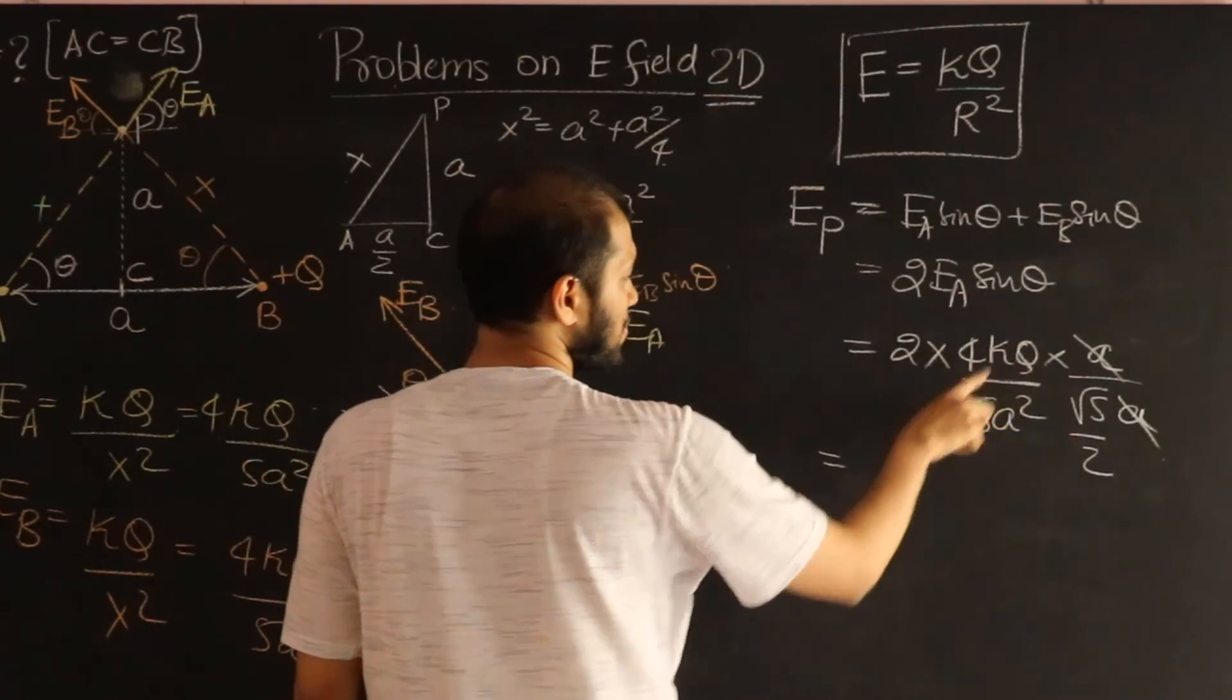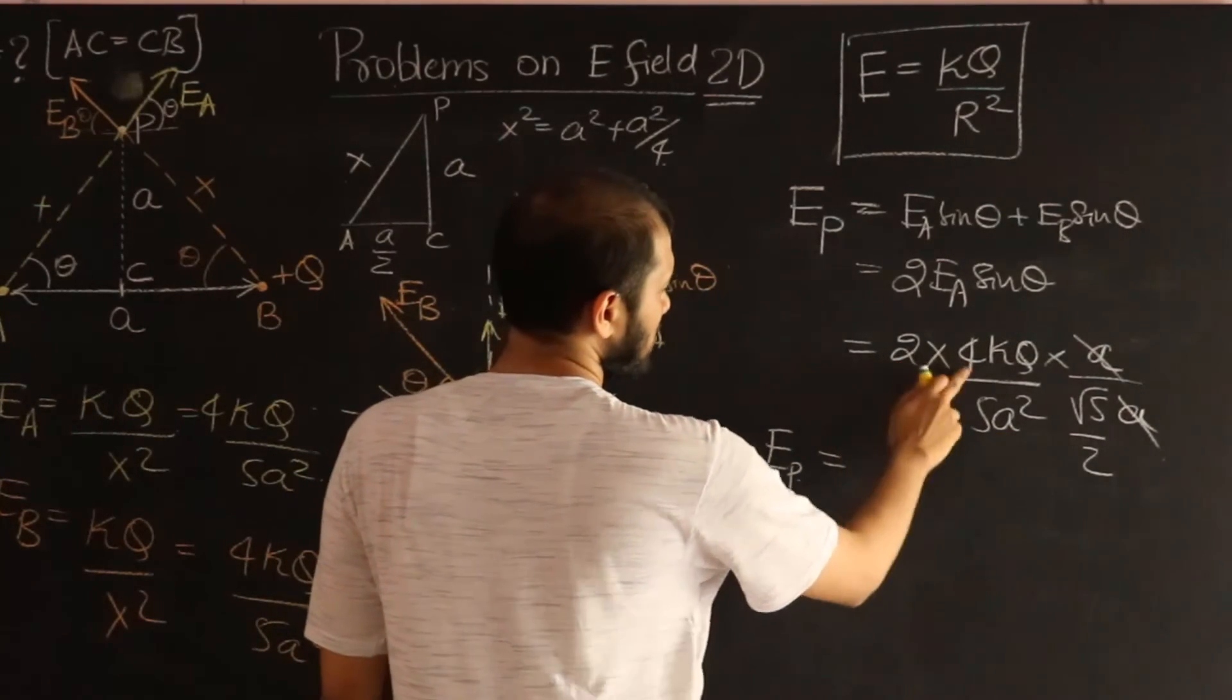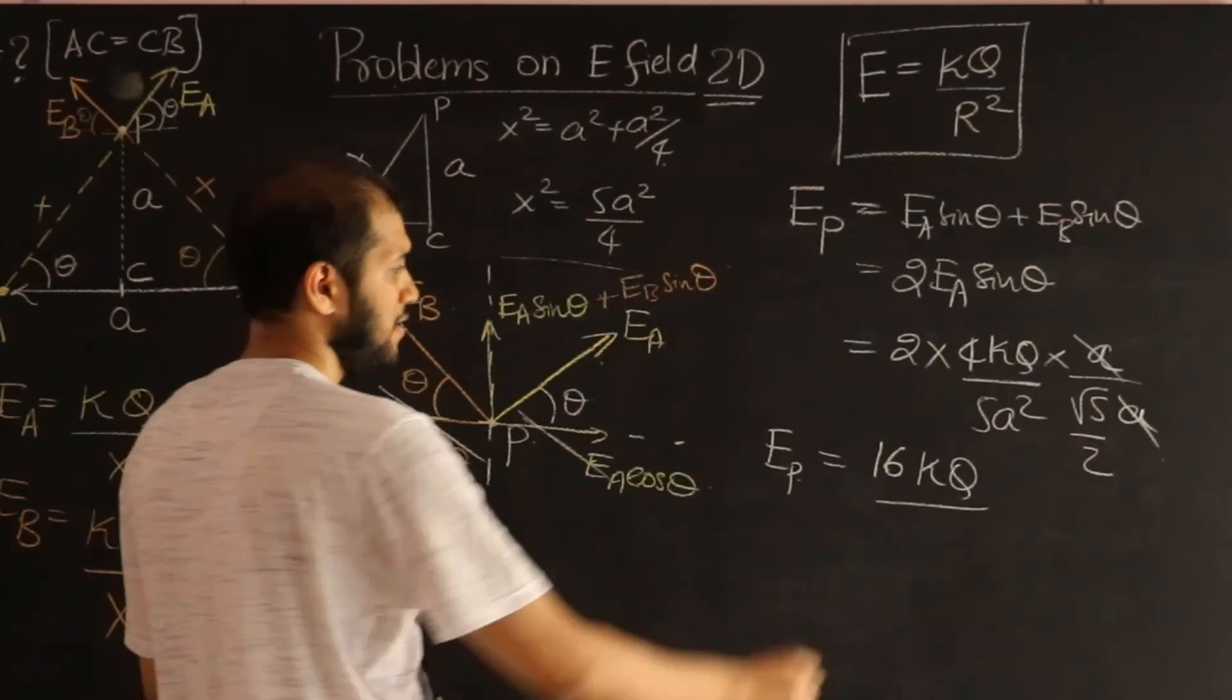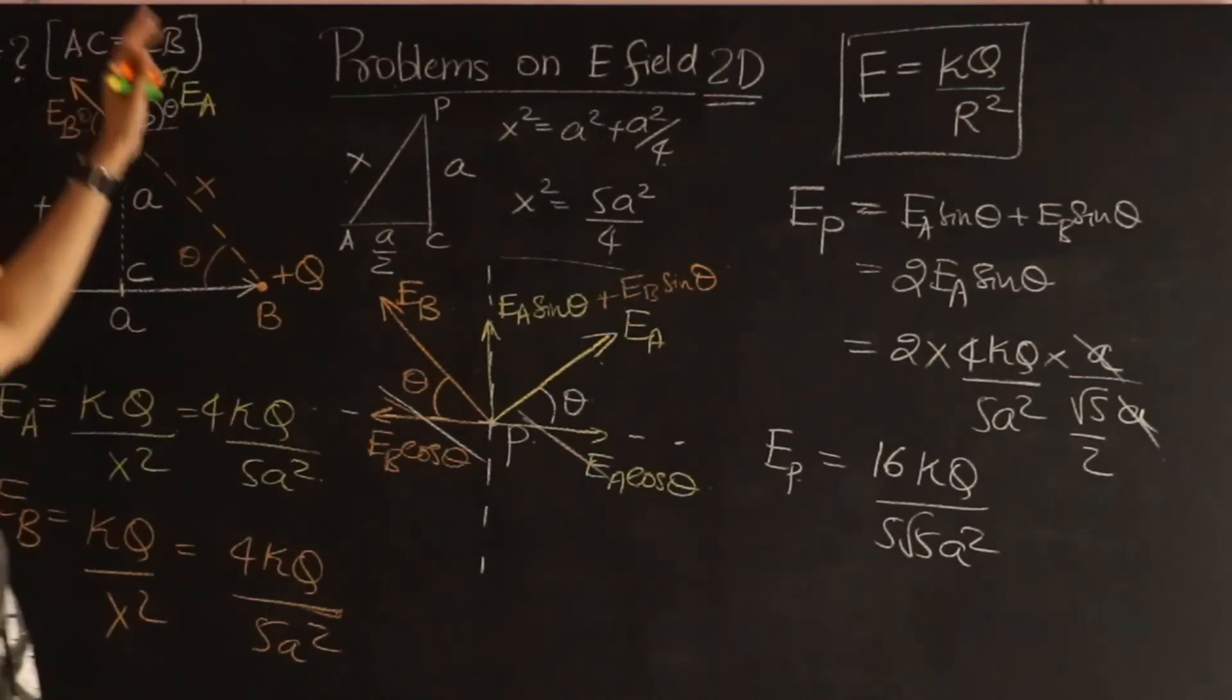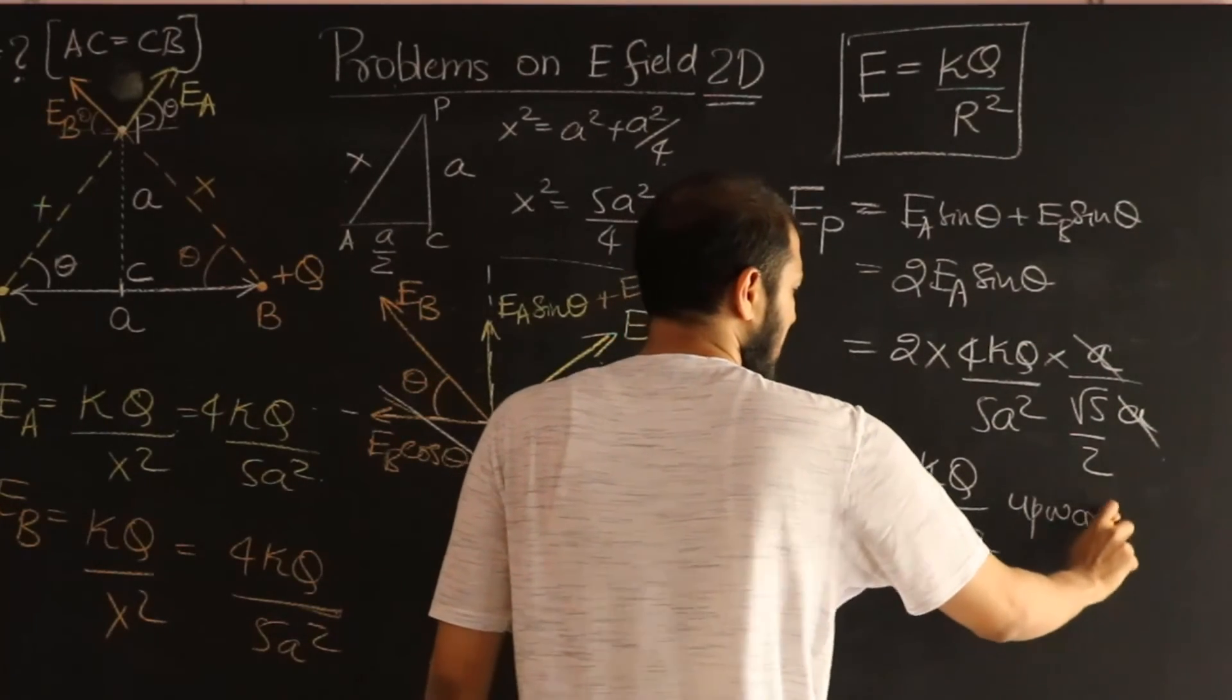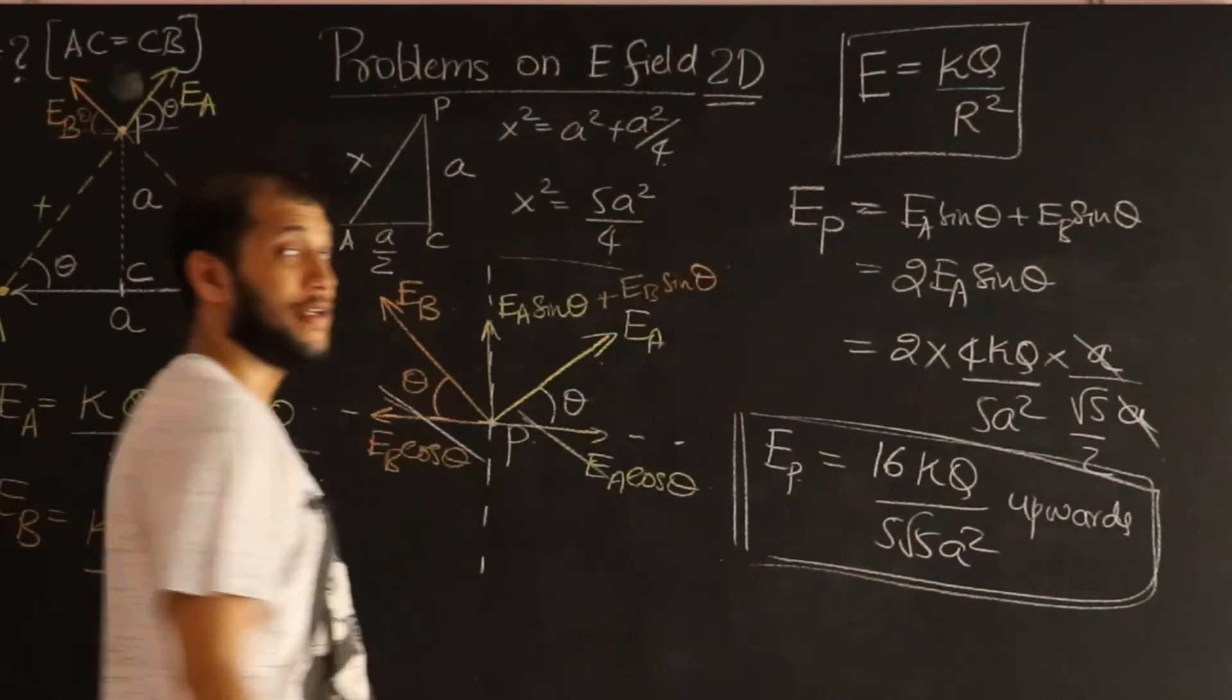And so, we now have our solution. The net field, EP, is going to be, let's see. You get 16KQ divided by 5 root 5A squared. And I'm just going to call that as upwards. And there you have it.